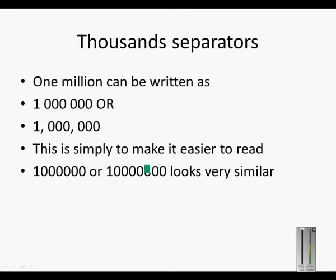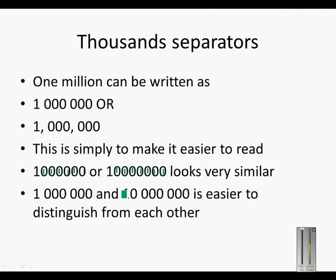Because if you look at these two numbers, one has six zeros and the other has seven zeros — they look very similar. But if we put in a thousand separator and make groups of digits, we can clearly see that this is one million with six zeros, and this is ten million with seven zeros. So it's easier to distinguish them from each other.